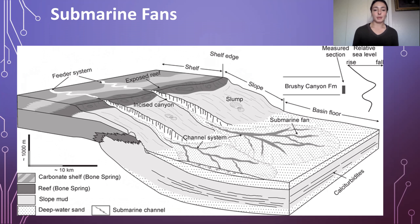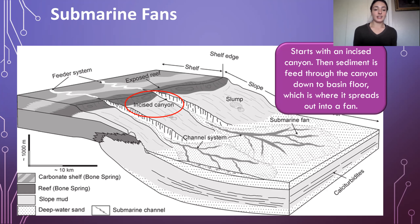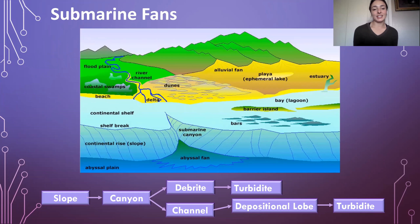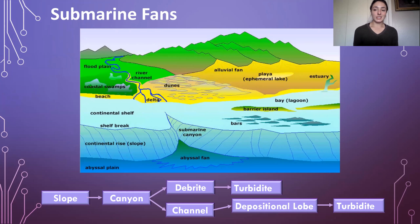Zooming in on a submarine fan system, we have the shelf, then the shelf edge, then the slope, then the basin floor. An incised canyon runs through the shelf edge and slope down to the basin floor — this canyon feeds the submarine fan. Sediment feeds through the canyon and fans out on the basin floor. A river feeds deltaic sediment to the shelf, then sediment travels down the canyon to the abyssal fan. Moving offshore, you first encounter debris flow and channel deposits, then turbidity flow deposits and depositional lobes.